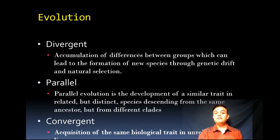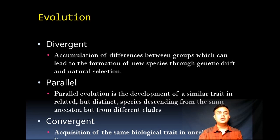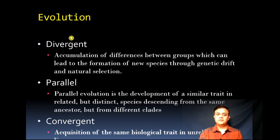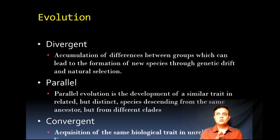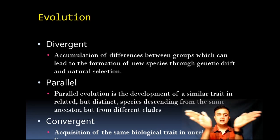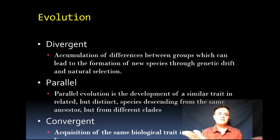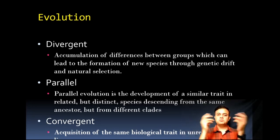What are the different kinds of evolution? First, we can see divergent, parallel, and convergent — these are the three forms of evolution. In divergent evolution, as the name says, it is diverging: like one street diverging into two different streets. So it is basically from one species, two species are being formed.